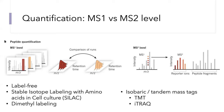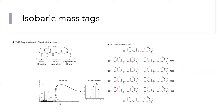There are several different systems for isobaric tandem mass tag labeling. Two of the most widely used commercial versions are known as TMT and iTRAQ. The structure of a TMT isobaric mass tag is shown in panel A. One part is the amine-reactive group, which binds with the amine groups of the peptides. It has a mass normalizer, which is a portion of the molecule containing different numbers of heavy atoms. And it has the mass reporter, or reporter ion, which again can contain different numbers of heavy atoms.